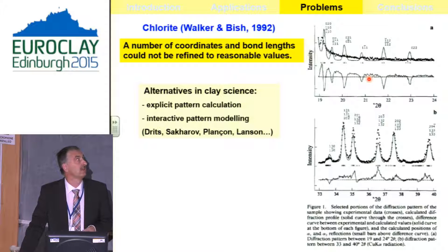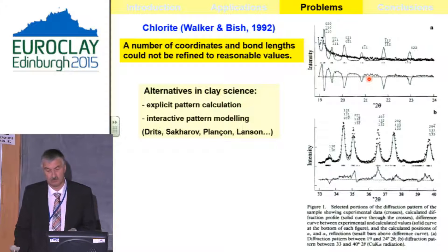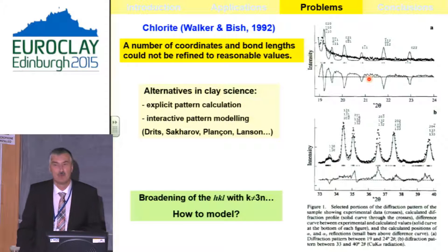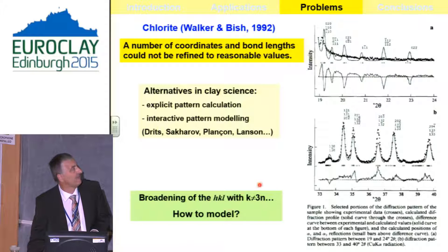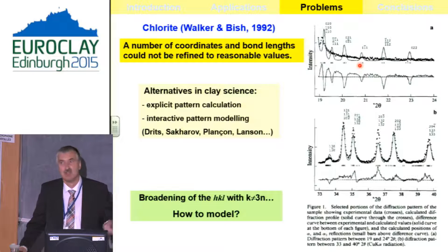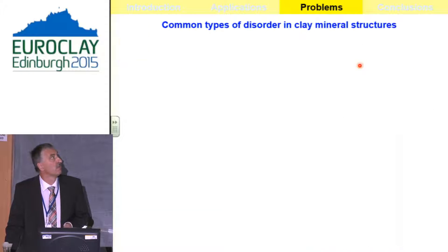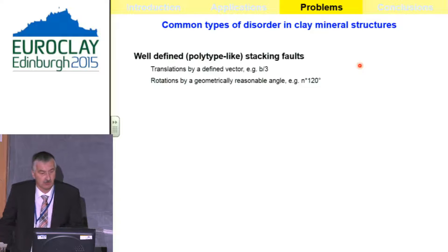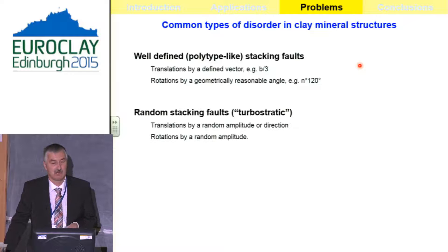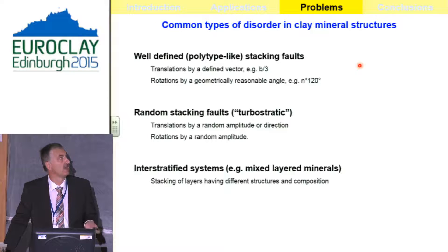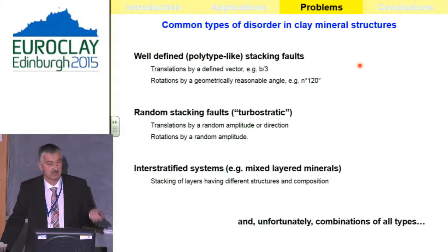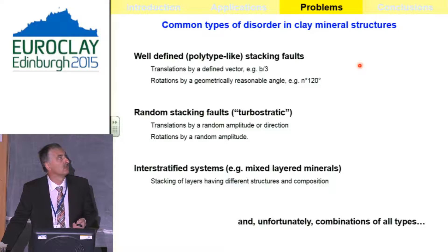If someone insists on applying the Rietveld method, the simple question arises: how can we model a pattern where the broadening of a group of reflections becomes bigger than others? To understand this, we can distinguish some types of disorder in clay minerals: well-defined stacking faults by translations or rotations, random stacking faults, planar turbostratic disorder, and mixed layering — and unfortunately, combinations of all of these in real clay minerals.